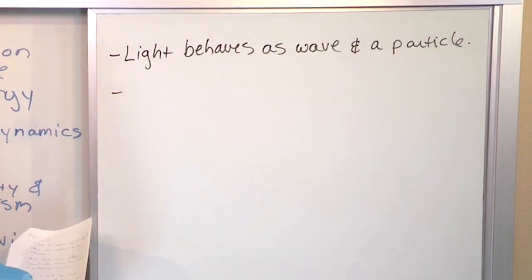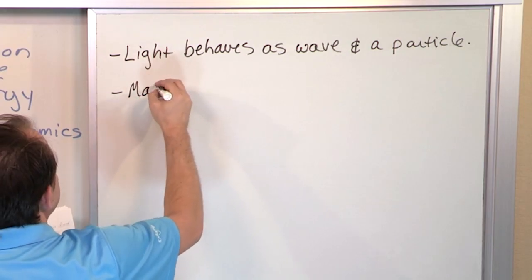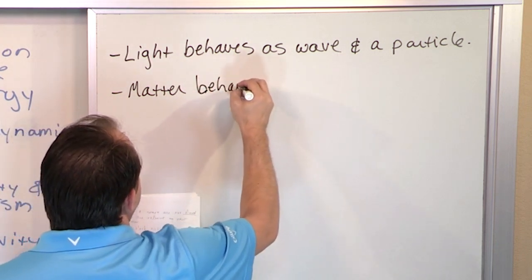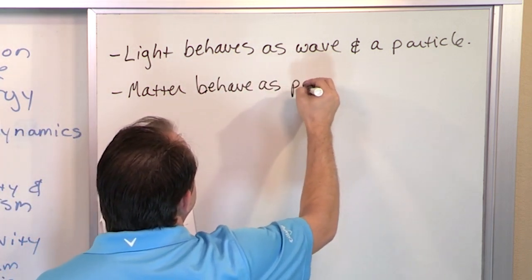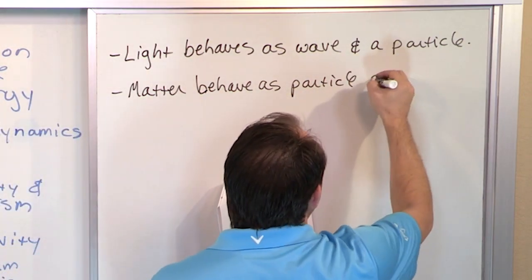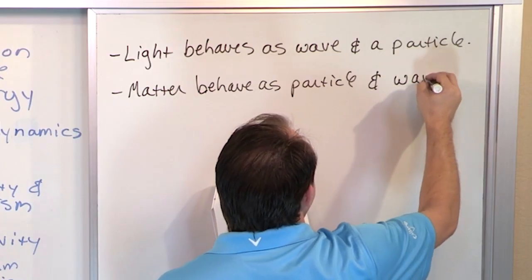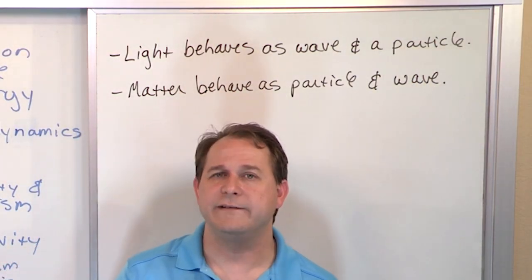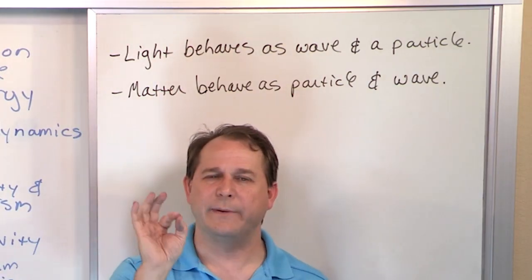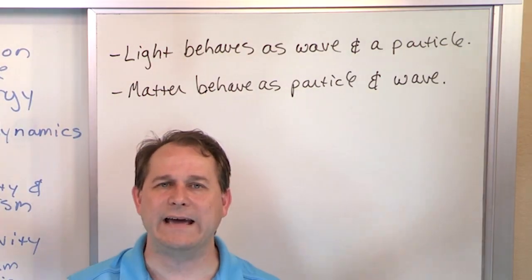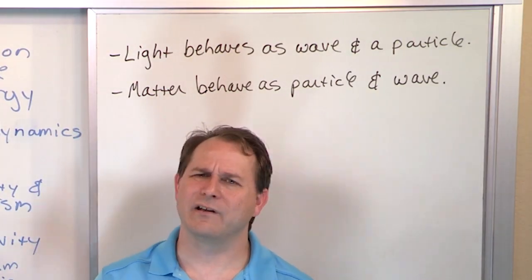Now here's the other part that will blow your mind. Matter, meaning electrons, protons, pretty much anything, can behave, obviously as a particle, because we've done lots of experiments with electrons. We know they're little particle things. But it can also have characteristics of a wave. That should blow your mind because it's absolutely crazy that I can take an electron and it can behave in some experiments like a little discrete particle, but in other experiments it can interfere like waves interfere.